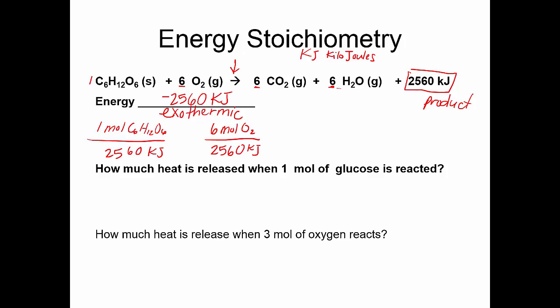For every six moles of oxygen, you also release 2,560 kilojoules. For every 2,560 kilojoules of heat, you also have six moles of carbon dioxide. We can set up any mole ratio with heat, just like we set up any of our other mole ratios. But notice — it's moles. So if I don't have moles, that's the problem we'll have to address. If I have grams, we'll still have to convert to moles.